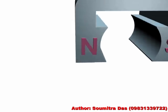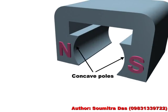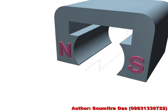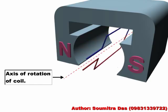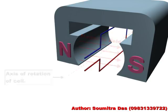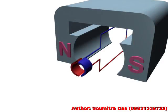There is a horseshoe magnet with concave poles. There is a rectangular armature coil placed over here. The axis of rotation of the coil is perpendicular with the direction of the magnetic field. A split ring commutator is attached to the ends of the coil like this.